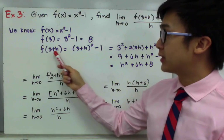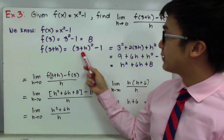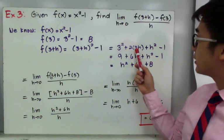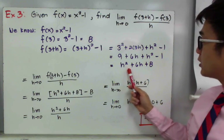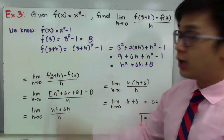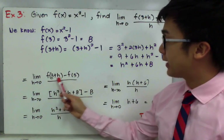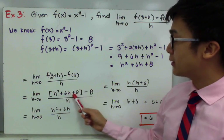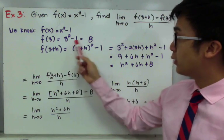To find f of 3 plus h, we replace x with 3 plus h, giving us the quantity 3 plus h squared minus 1. Expanding the binomial gives 3 squared plus 2 times 3h plus h squared minus 1, which simplifies to h squared plus 6h plus 8. This is our f of 3 plus h. Substituting into the formula, we have h squared plus 6h plus 8 minus f of 3, which equals 8.